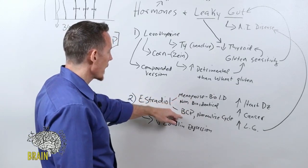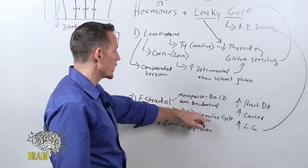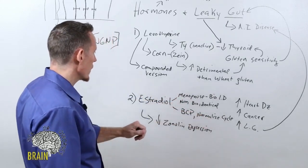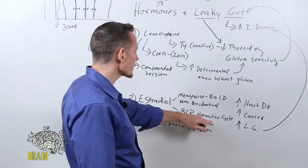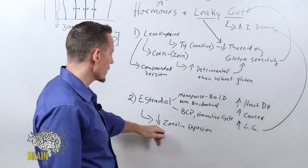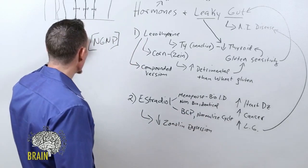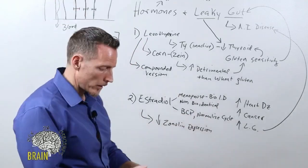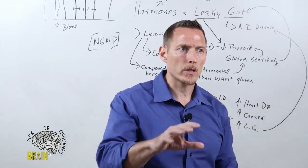Estradiol, whether you're taking it for menopause symptoms, birth control, or to normalize your menstrual cycle, reduces zonulin expression, creating the potential for a leaky gut scenario. If you look at this research study, I'm going to have it thrown back up on the screen for you.